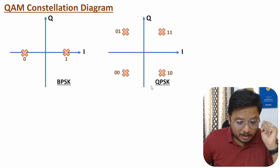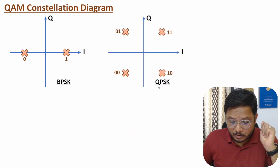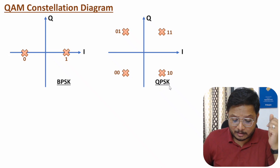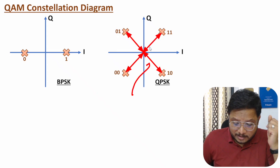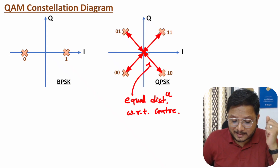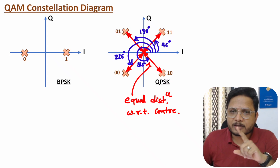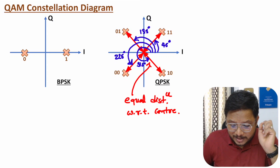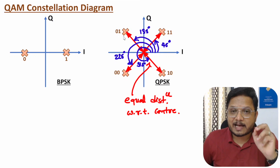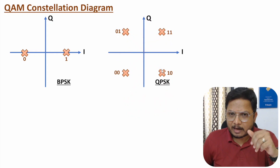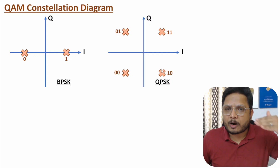Four-symbol QAM is also similar to four-symbol PSK (QPSK). If you have equal distance with respect to the center and bisect 360 degrees into four symbols, you get a 90-degree phase spacing to represent those four symbols. Here also, we are not changing amplitude — all symbols have equal distance from the center — we are only changing phase.